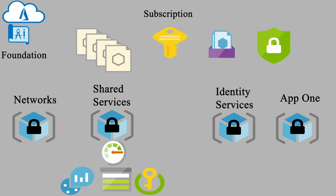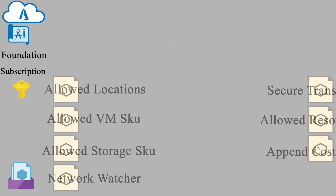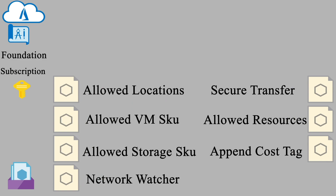Additionally, we have Security Center Standard — which is a good best practice and needed for some higher-level governance features. On top of that, we'll be deploying some Azure policies and an initiative. Those policies will allow specific locations for resources and resource groups, control permitted VM SKUs and storage account SKUs, and enforce the deployment of Network Watcher — which is part of Azure Monitor — as well as enabling secure transfer for our storage accounts.